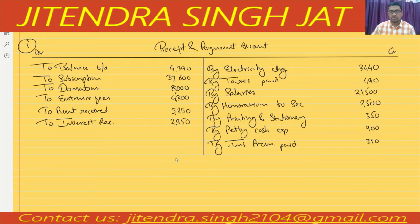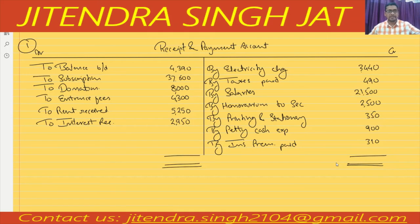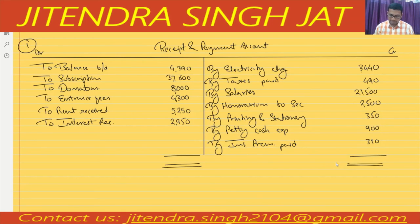This is a very simple, very general question. Now let me do the total of the debit side. Four thousand three ninety, plus thirty-seven thousand six hundred, plus eight thousand, plus four thousand three hundred, plus five thousand two fifty, plus two thousand nine fifty — total of debit side: sixty-two thousand four hundred and ninety.